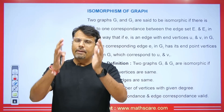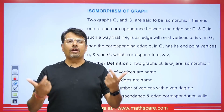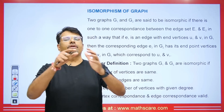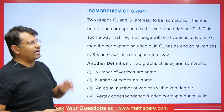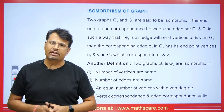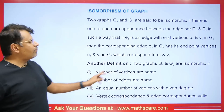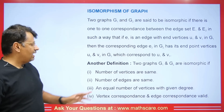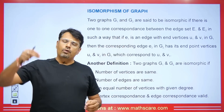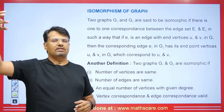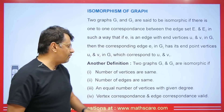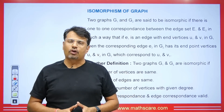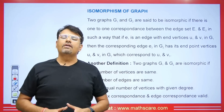We will discuss isomorphism of a graph. The definition states that if we have two graphs, there should be a one-to-one correspondence between the edges of those two graphs, and the endpoints — meaning the vertices — should also have a one-to-one correspondence. It is a bit difficult to find directly, so we have conditions to check: the number of vertices in both graphs should be the same, the number of edges should be the same, and there should be an equal number of vertices with a given degree. Finally, vertex correspondence and edge correspondence should both be valid.